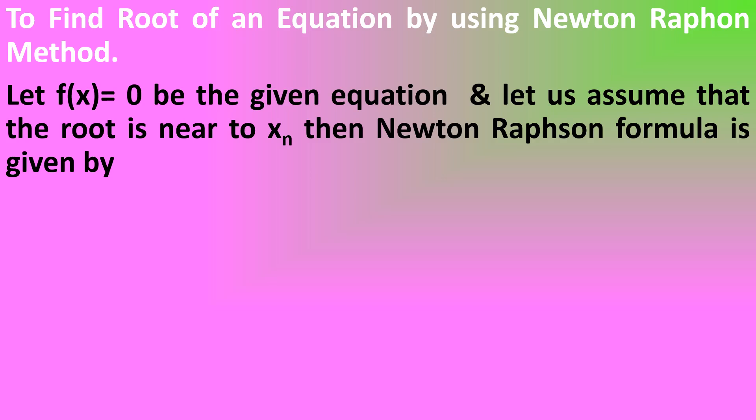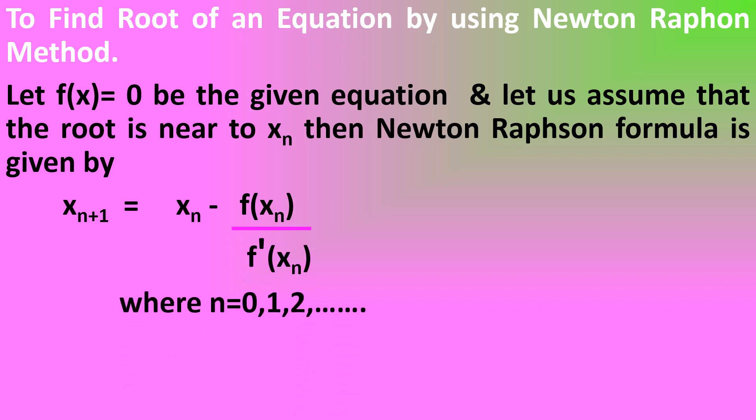The Newton-Raphson formula is given by: xn+1 = xn − f(xn) / f'(xn), where n = 0, 1, 2, etc. Here, f'(xn) is nothing but the differentiation of f(xn) with respect to x.